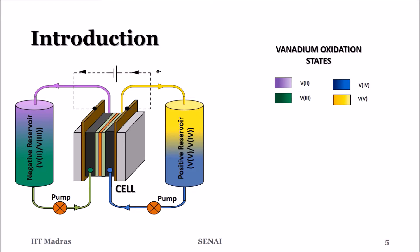VRFB takes advantage of the fact that vanadium exists in four different oxidation states. A sulfuric acid solution containing V2-V3 redox couple acts as the negative electrolyte, and a similar solution of V4-V5 redox couple acts as the positive electrolyte. A fully discharged flow battery will have V3 in negative and V4 in positive electrolytes.